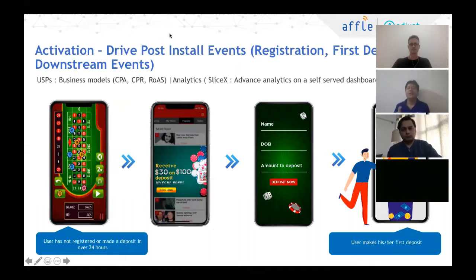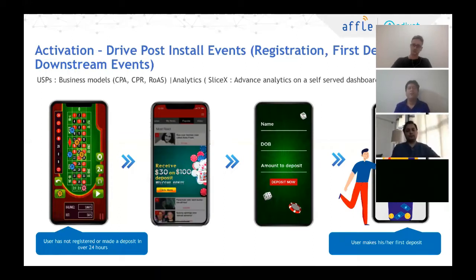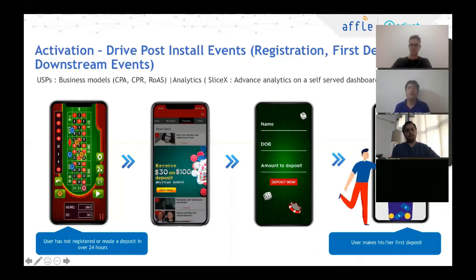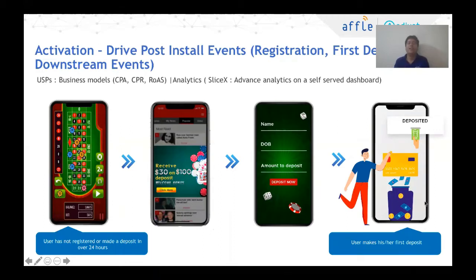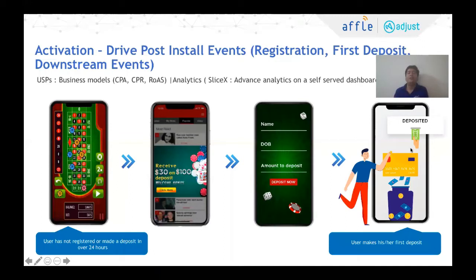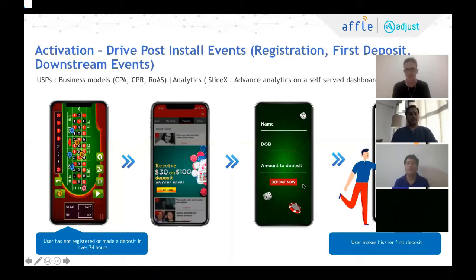The other interesting challenge is activation — we get a lot of installs, but then people do nothing. This is a classical case in social casinos and real money gaming, where a lot of people would install a Rummy app or poker app but won't do the first deposit. What we do is try to optimize through downstream events — whether it's CPA, cost per registration, or return on advertising spend. Unlike a lot of programmatic channels that are largely brand-heavy and buy on CPM, we let you buy on flexible models like CPR or CPA. We optimize the whole algorithm to downstream metrics — not just getting the install, but did the player make the first deposit.